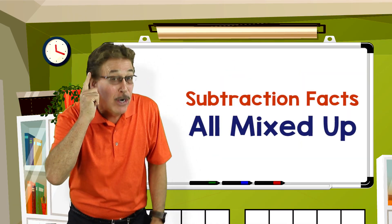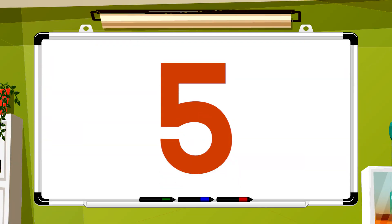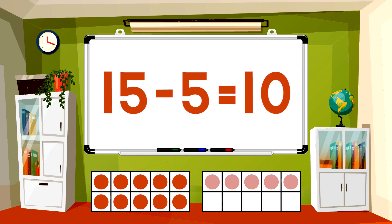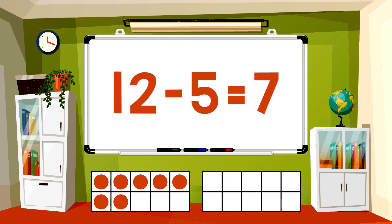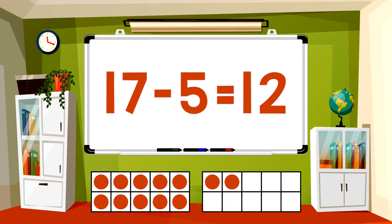Let's learn our subtraction facts, all mixed up. Subtract 5 from each number. 15 minus 5 equals 10. 12 minus 5 equals 7. 6 minus 5 equals 1. 17 minus 5 equals 12.